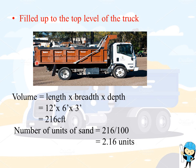This is the length of the truck, this is the depth, and this is the breadth. We assume the values as 12, 6, and 3 feet, so we get the volume as 216 cubic feet. Therefore, the number of units of sand is equal to 216 divided by 100, since 1 unit of sand equals 100 CFT. The answer is 2.16 units of sand in this truck.